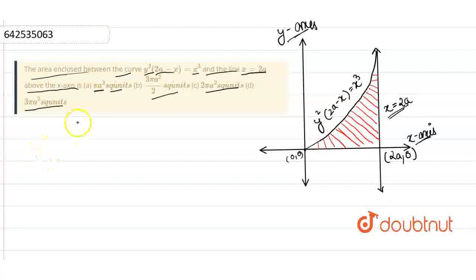So let's first elaborate the two equations which are given: y² = 2ax - x³, where x = 2a and x = 0 because it has to be above the x-axis, right?